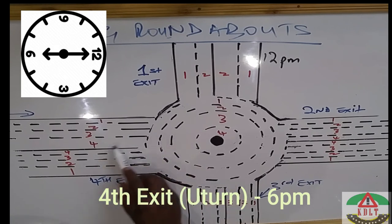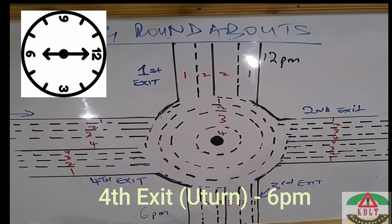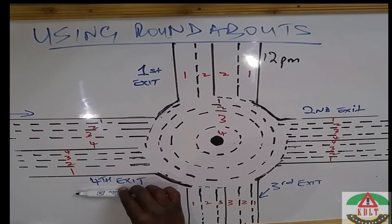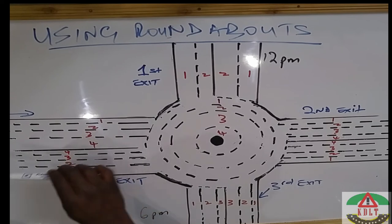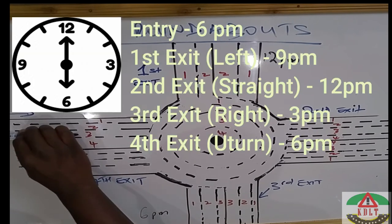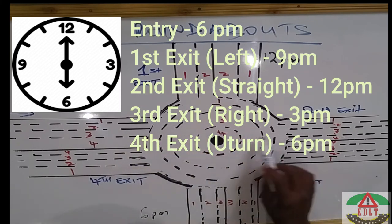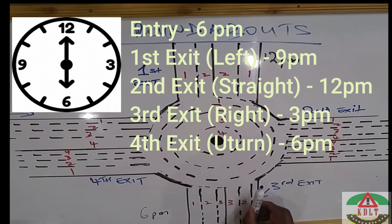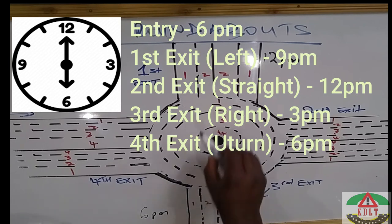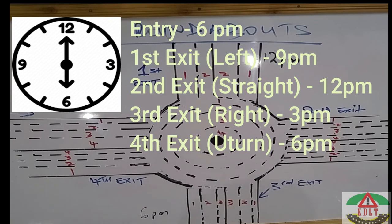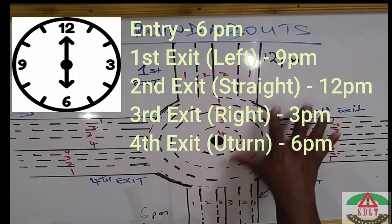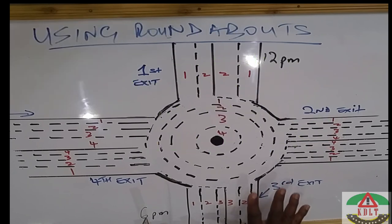The fourth exit means you are going back to the direction you came from. When approaching a roundabout, the first left is your first exit, going straight is your second exit, the right-then-left is your third exit, and the U-turn back to where you came from is your fourth exit. Those are the four ways you can exit a roundabout.